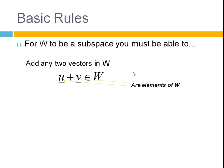And remember that these two vectors have to be in W. U is a vector in W and V is a vector in W. These vectors must be in the subspace and when they're both added, they must still be within the subspace.